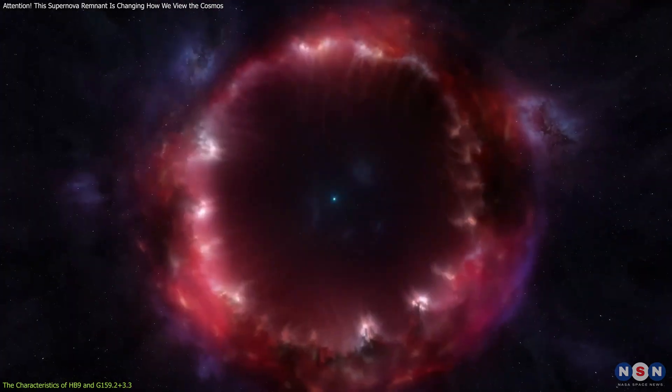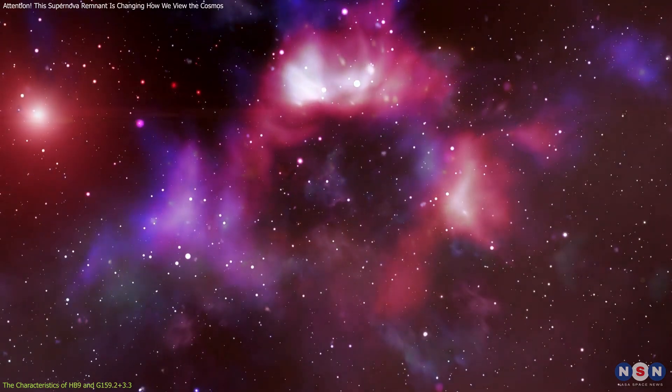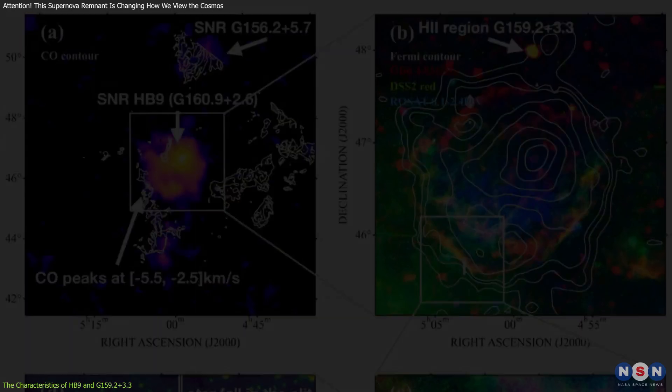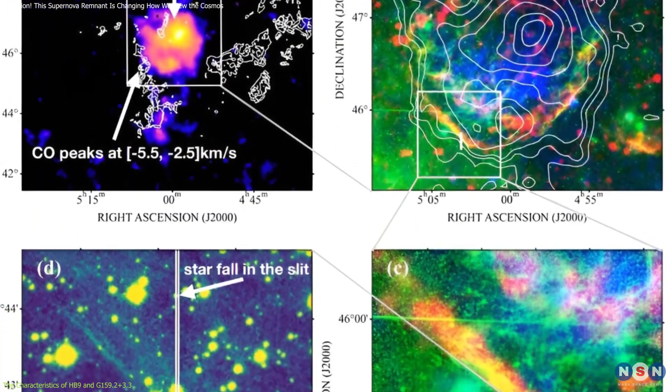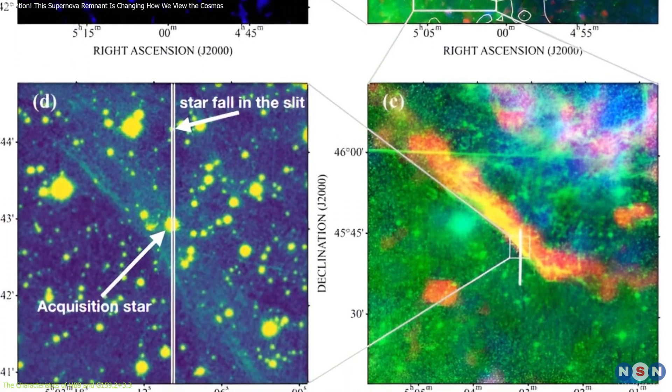However, establishing a physical connection between a remnant and an H2 region isn't straightforward. It requires careful observation and analysis across multiple wavelengths of light, from radio waves to gamma rays.